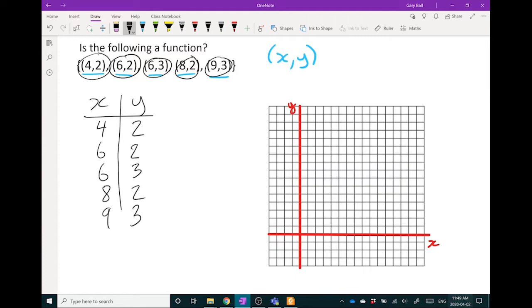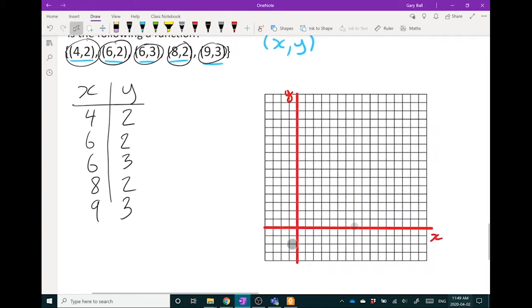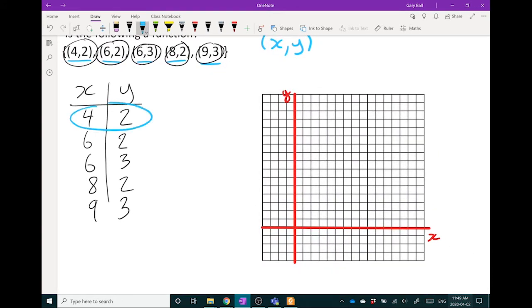All right, now to find out this is a function, I'm going to graph it. I'm going to put them over here on the graph. Let's start. This point right here is 4 over on the x, 2 up on the y. Put it right there. Next one is 6 over on the x, 2 up on the y. That's that point. Next one is 6 over on the x, 3 on the y. And I've got 8 over on the x, 2 on the y, and then 9 over on the x, 3 up on the y.